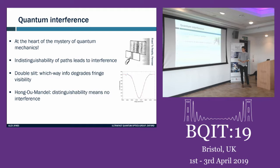Something similar happens in Hong-Ou-Mandel interference of two photons. If your photons are prepared in orthogonal states, then the paths to coincidence detection don't interfere anymore and you return to classical dynamics. In both cases, distinguishability means loss of interference — so it's natural to ask: does that extend to larger multi-particle systems?